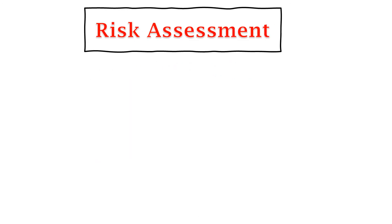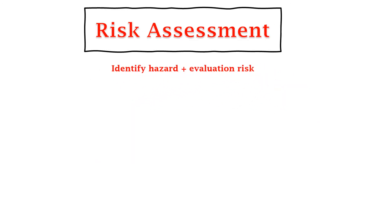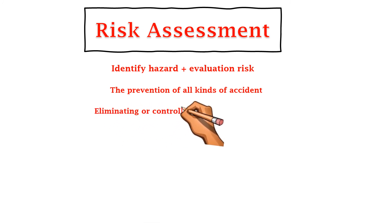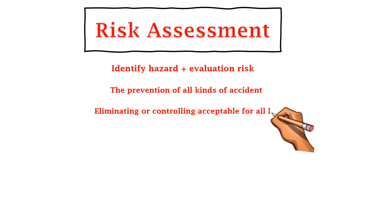These are the five elements of the risk assessment process. You should understand each step — identifying hazards, evaluating the risk, making preventions for all kinds of accidents and incidents, and eliminating or controlling risks at all levels.